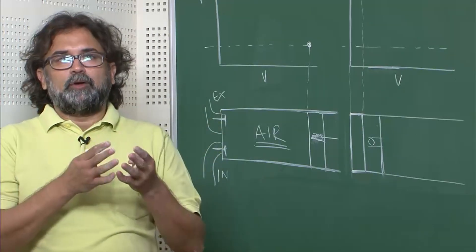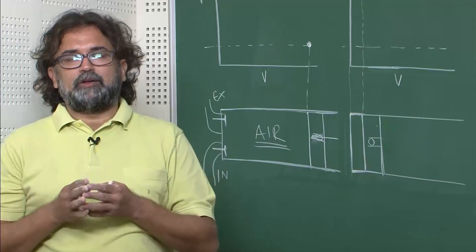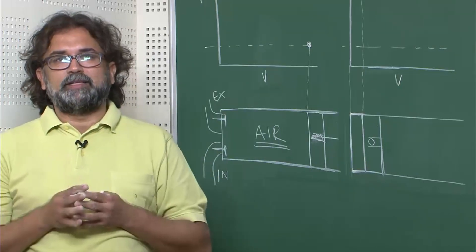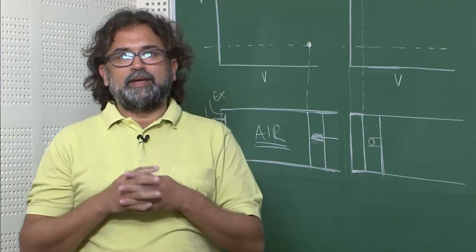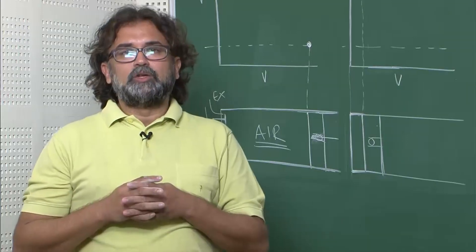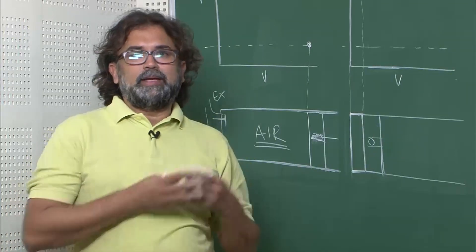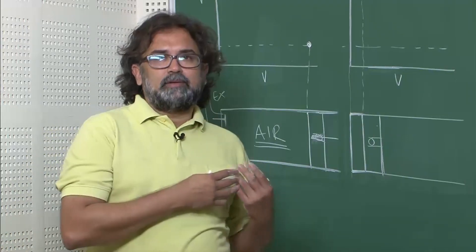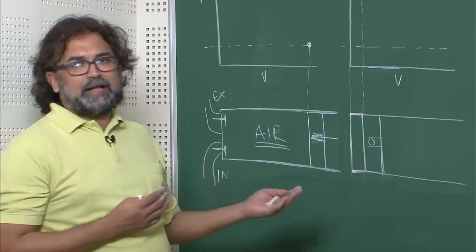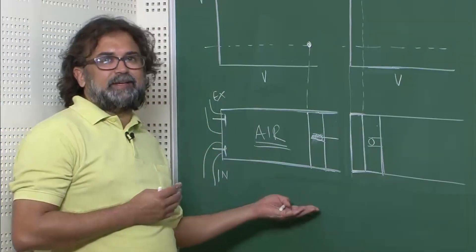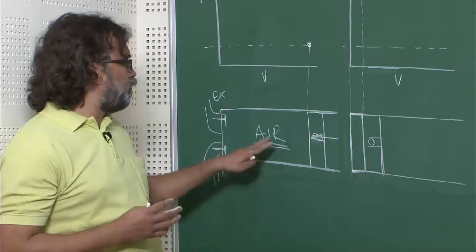From a typical stoichiometric or oxidation reaction you can find out how much air is required to burn that particular fuel. In a diesel engine — we will explain why in a later lecture — we actually give excess air, meaning a lot of air is given beforehand.